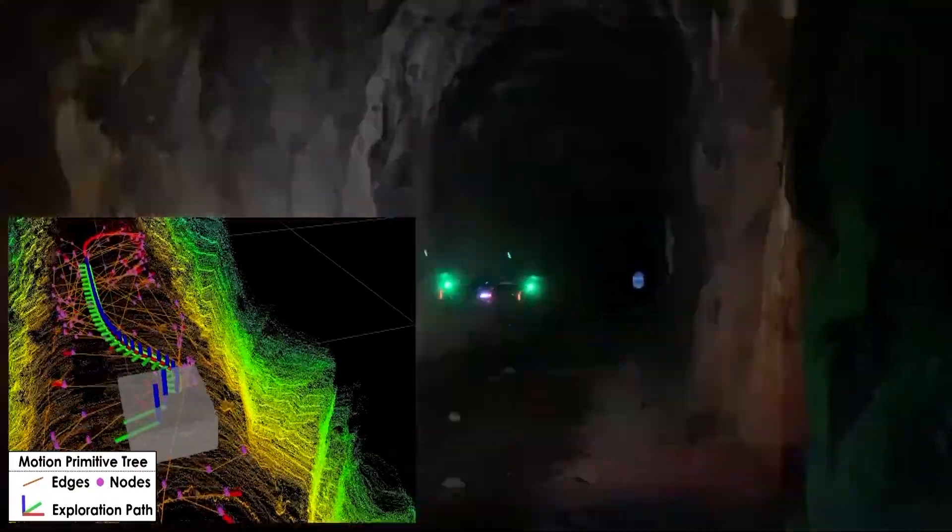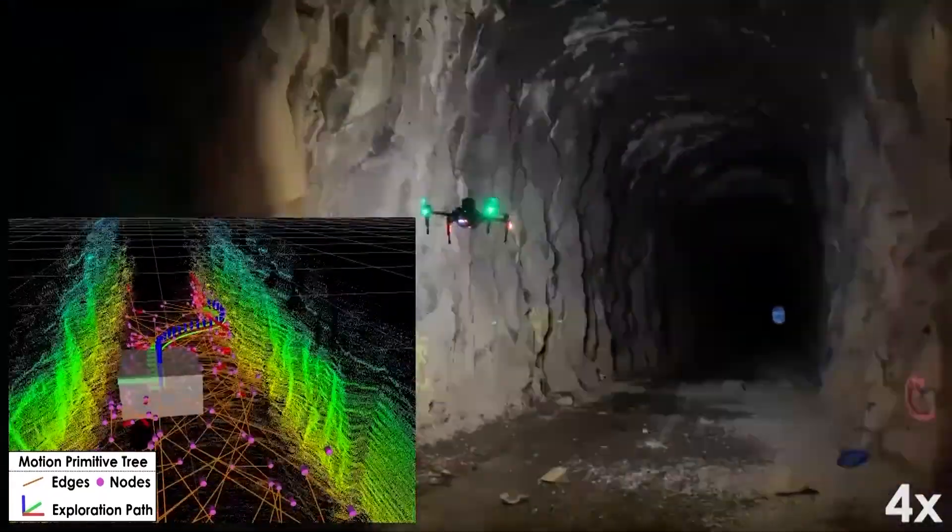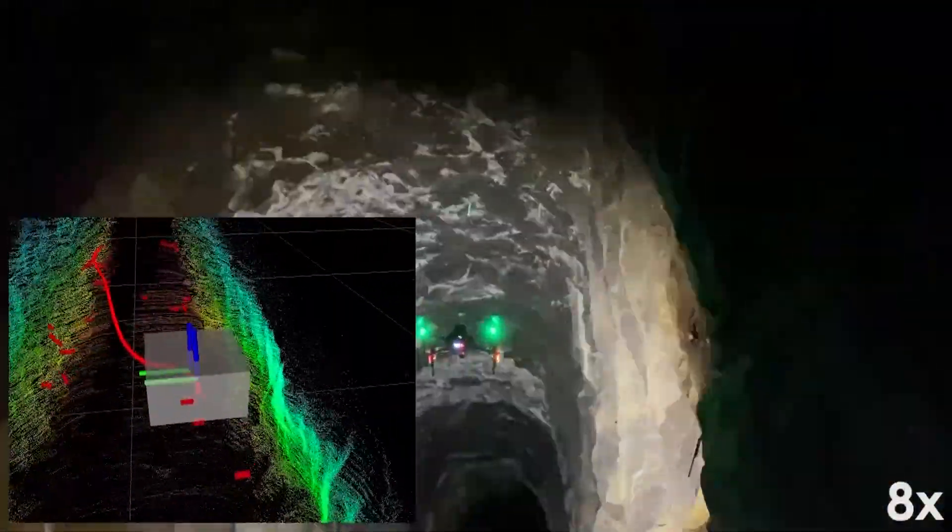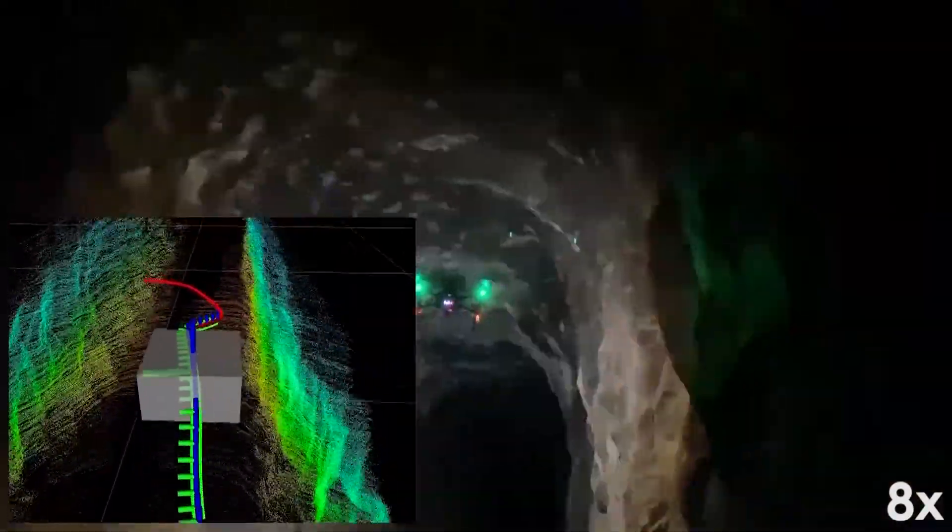The robot was deployed inside the tunnel, autonomously exploring the main tunnel using the local planner until its battery approached a limit. The global planner was then called to provide the shortest homing path.